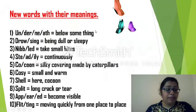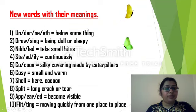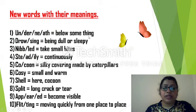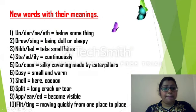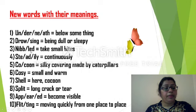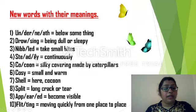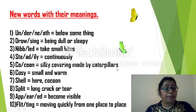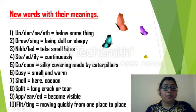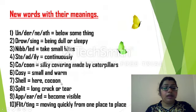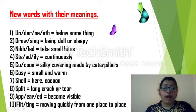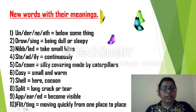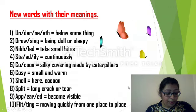Children, these are the meanings for the underlined words from the poem. Underneath means below something. Drowsing means being dull or sleepy. Nibbled means take small bites. Steadily means continuously. Cocoon means silky covering made by caterpillars. Cozy means small and warm. Shell, here means cocoon. Split means long crack or tear. Appeared means become visible. Flitting means moving quickly from one place to place.